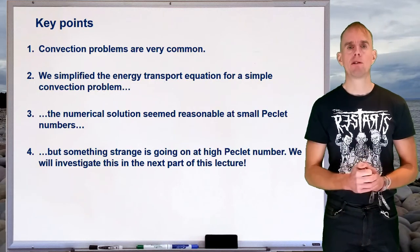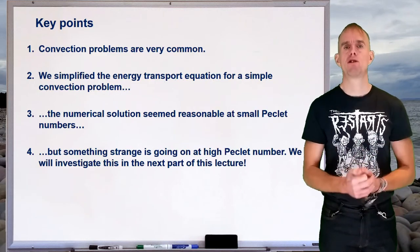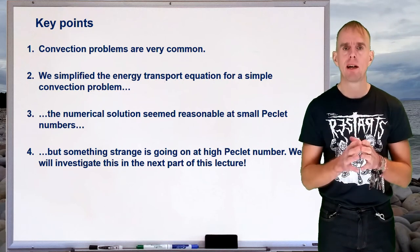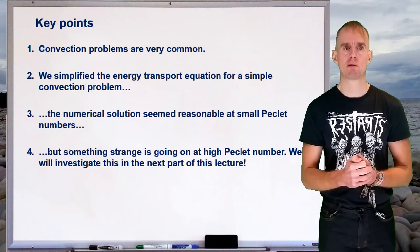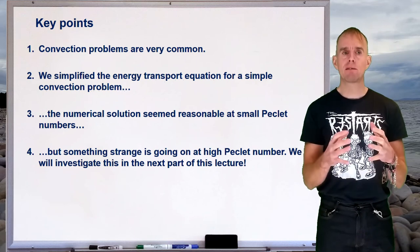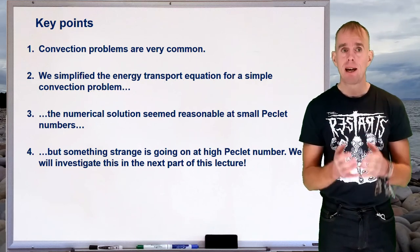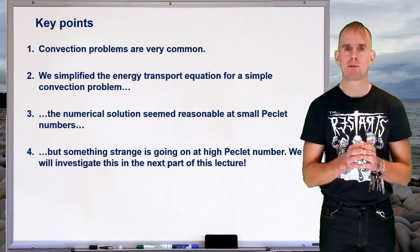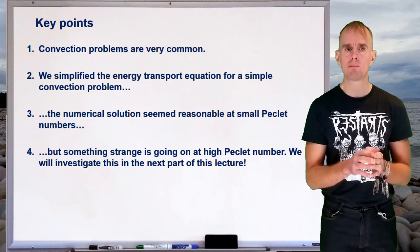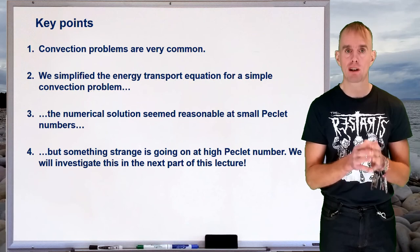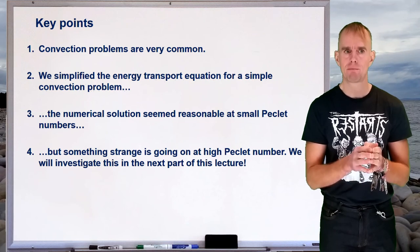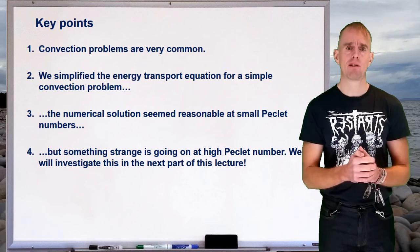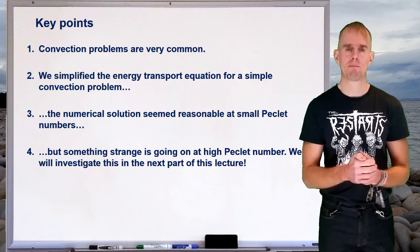So, a few key points: convection and convection-diffusion problems are very, very common. We've looked at a specific energy transport convection-diffusion problem, simplified it, and examined two solutions. One solution — at small Peclet number where conduction dominates — seems reasonable. But something very odd is happening for the inverse case, where convection dominates conduction. We need to investigate this.